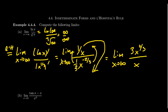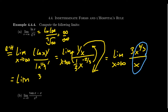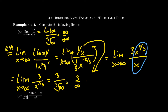We now have powers of x on top and bottom: x to the two-thirds on top and x to the one on the bottom. Simplifying the exponents gives us the limit of three over x to the one-third power as x approaches infinity. As x goes towards infinity, we get three over the cube root of infinity, which is three over infinity — this squishes down to zero. So by L'Hôpital's rule, since this limit is zero, the original limit was zero as well.